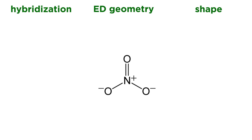Here is the Lewis dot structure. Nitrogen is going to have to have four bonds: one bond each to two of the oxygens, and then a sigma bond and a pi bond to that third oxygen. That means two of the oxygens will be negatively charged, and the nitrogen will be positively charged, because when nitrogen has four bonds it has a positive charge. That is the Lewis dot structure for the nitrate ion.